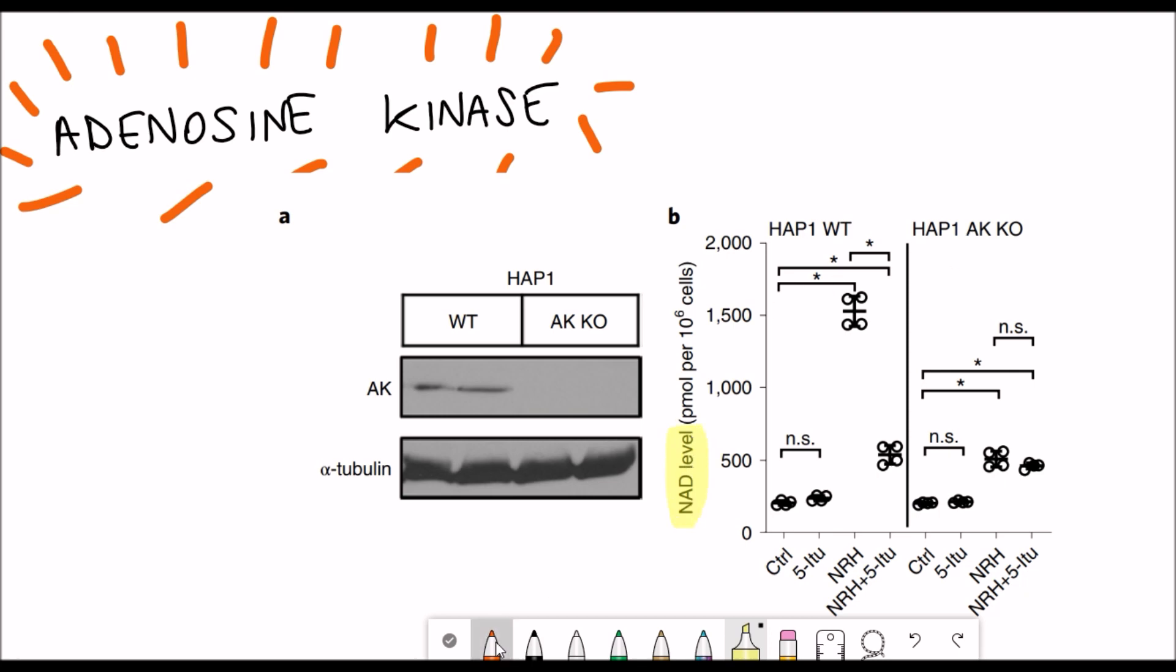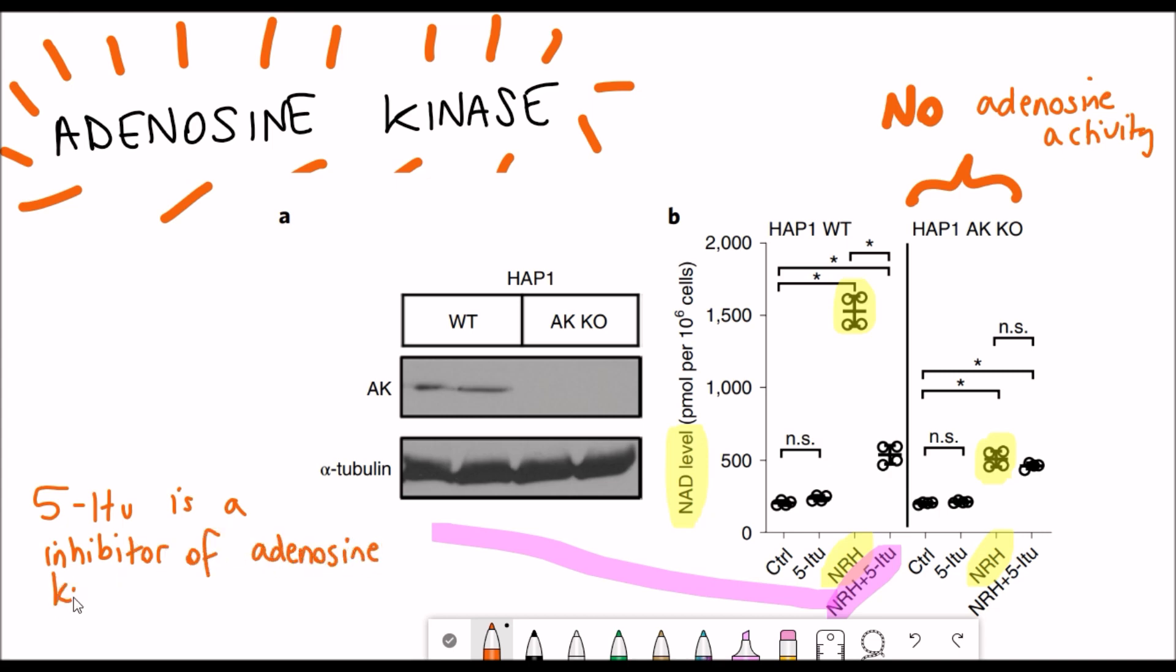To confirm that adenosine kinase is indeed the correct kinase responsible for this reaction, they then took two approaches to test this. One was to take some cells where they're not expressing adenosine kinase, the gene's been knocked out. What you can see in the graph is that by knocking out adenosine kinase and then adding NRH, you don't get that increase in NAD plus levels that you can see in the normal cells. The alternative approach they took was a pharmacological approach, and instead of knocking out adenosine kinase they used an inhibitor, and that also had the effect of reducing the NAD plus levels. These two approaches have both shown that adenosine kinase is critical for getting that increase in NAD plus levels when NRH is applied to the cells.